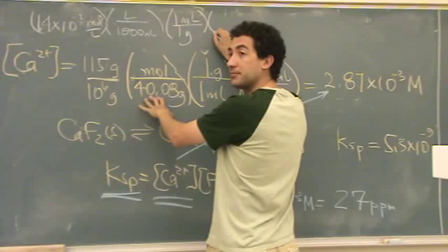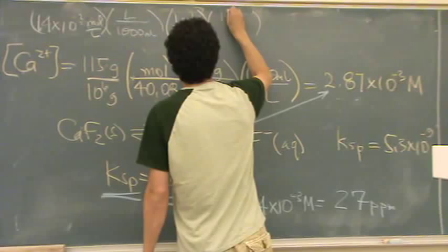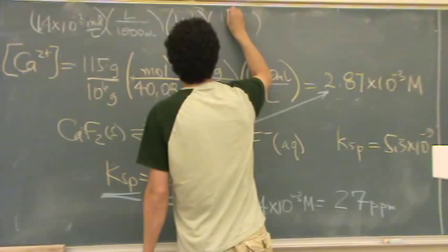And now, I can't use this number because this is calcium. I need to look at my periodic table and find it for fluorine. 19. So we got 19 grams per mole. And that's supposed to equal 27. Is that okay? Yeah.